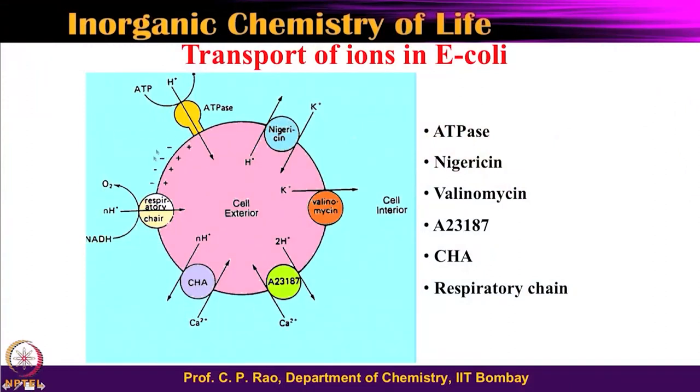Welcome to the next class on the Inorganic Chemistry of Life: Principles and Perspectives. In the previous class we have been talking about ion transport phenomena in terms of uniport, symport, and antiport. We have seen that certain ion transport will change the potential, and certain ions transport will not change because one ion is going in one direction and another ion in the other direction having the same charge. Sometimes when it is H+ the pH variation will happen.